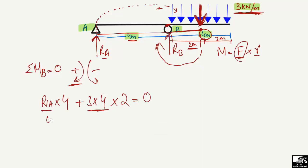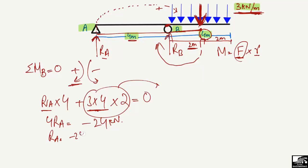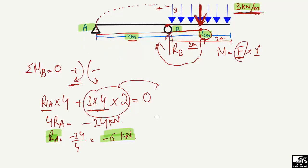Solving the moment equation at B, shifting values to the right side gives minus 24 kN. Dividing by 4 gives RA = minus 6 kN. The negative sign means our assumed direction was wrong — RA is actually acting downward, not upward. So RA = 6 kN acting downward.